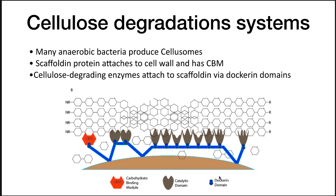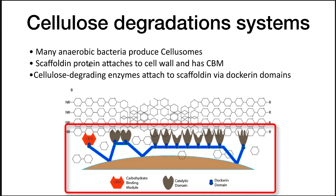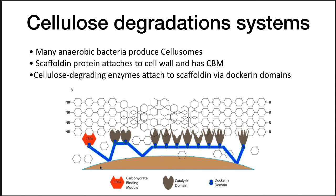Anaerobic bacteria use a different system called a cellulosome, which has all the cellulose-degrading enzymes on a scaffold made of the scaffoldin protein. The scaffold attaches to the cell wall, and the cellulose-degrading enzymes attach to the scaffoldin via dockerin domains. A carbohydrate binding domain binds to the cellulose, bringing everything in close contact and degrading it. Cellulosomes are more efficient because they keep all the enzymes together close to the organism, giving anaerobic bacteria a significant advantage.